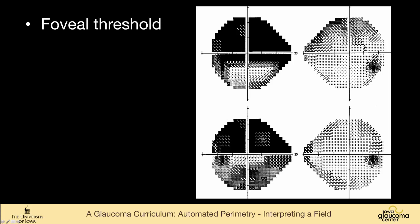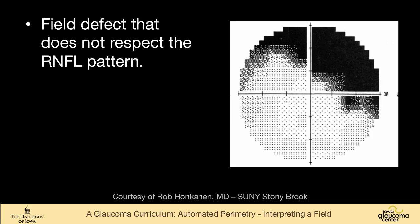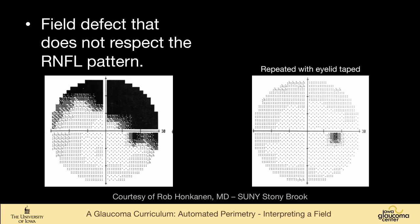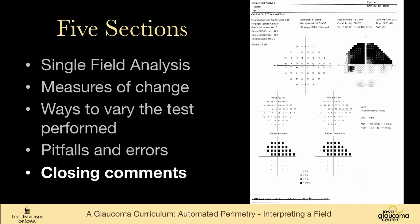Sometimes you'll see a field defect like this that has this dense superior defect but it doesn't really follow the nerve fiber layer pattern. It extends down here below the blind spot. This does not look like the nerve fiber layer does. And this is somebody with a drooping eyelid. And when it was taped, all that went away.